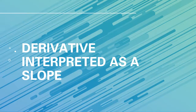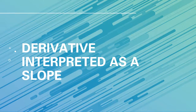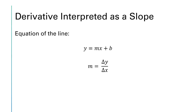Hello everyone. In this video we'll be discussing derivative interpreted as a slope. This is a continuation of the previous session on derivative using long method derivation. We have the equation of a line y = mx + b, and we'll use that to find the slope m, where m is equivalent to delta y over delta x.